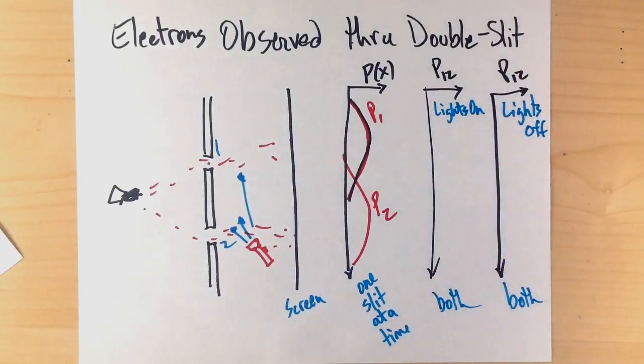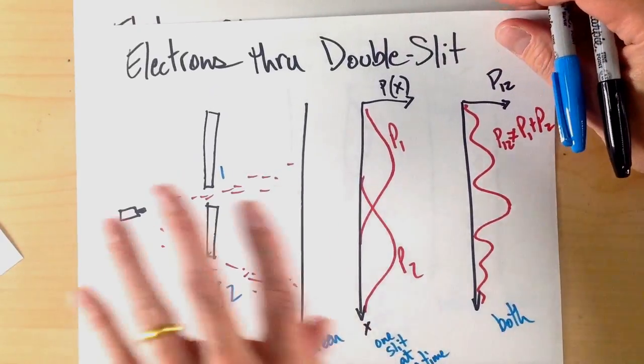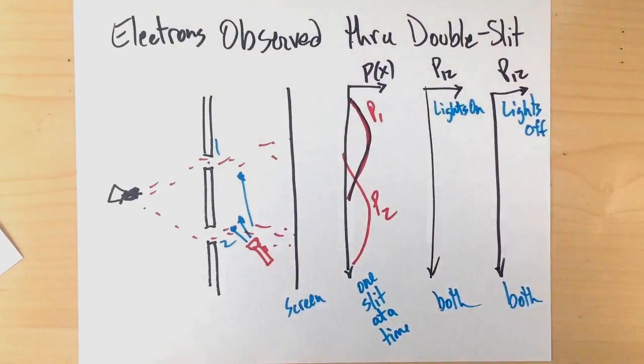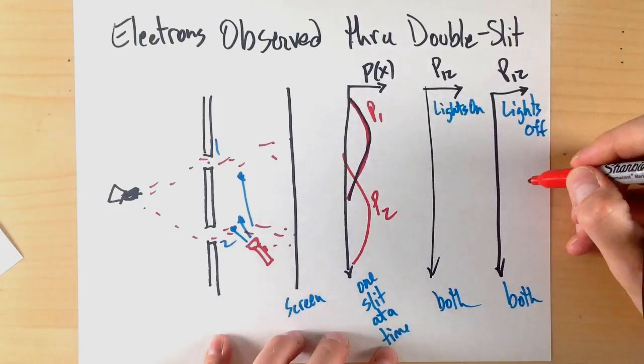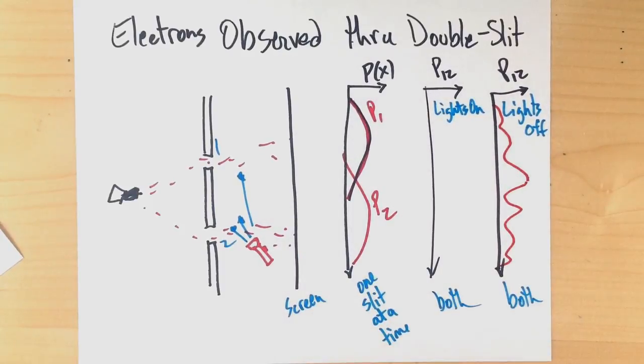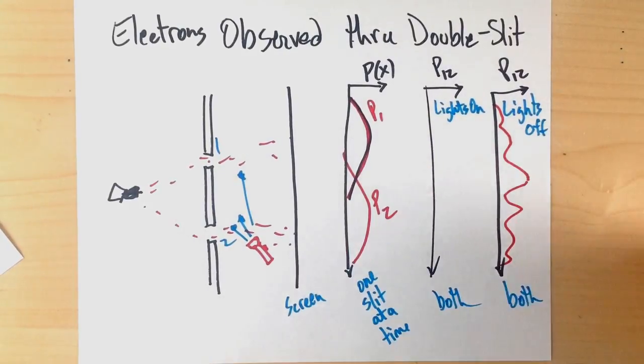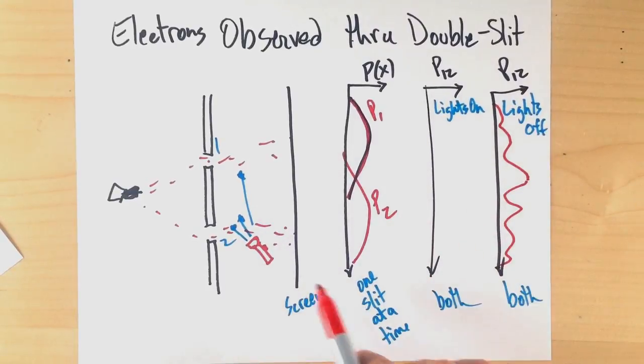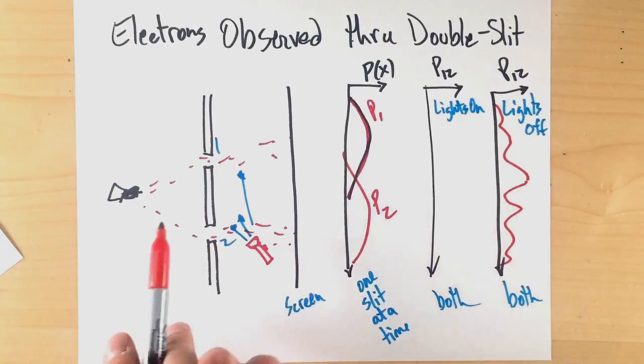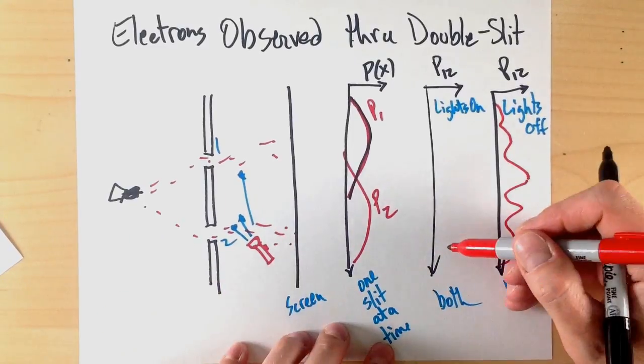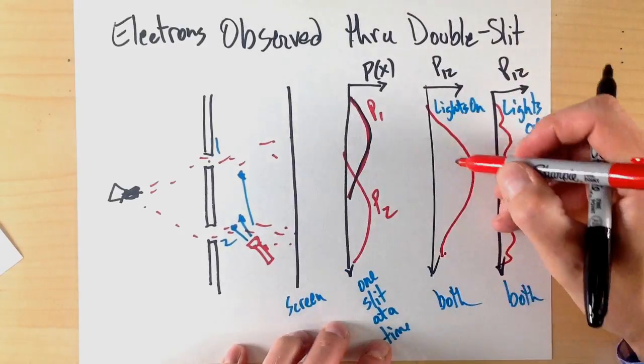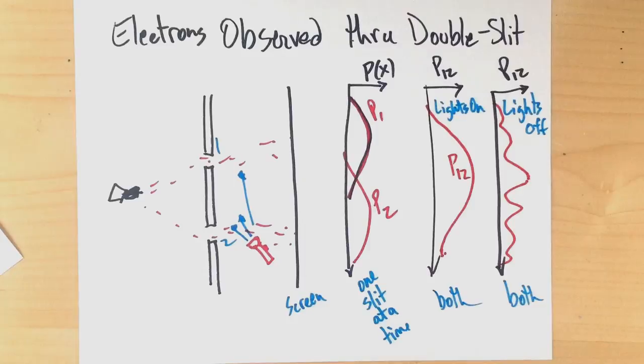And keep in mind that this case that we already drew is when we have no light, so in actuality the lights were off there. Now, so let's draw then the lights off case, because we already know what that is. That we get this wave nature, definitely. So what happens here? And that's the interesting bit. Well, the really amazing thing is that once we shine light here, and if the photons from our observation interact with the electrons that are coming through here, then they suddenly go back to being particles, and we wind up getting this distribution.